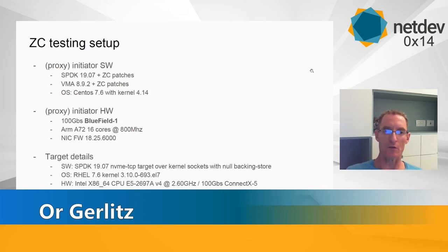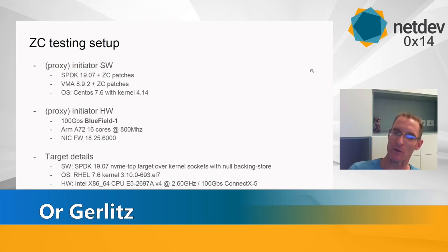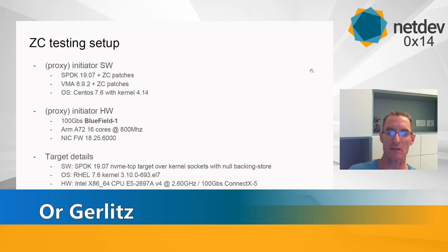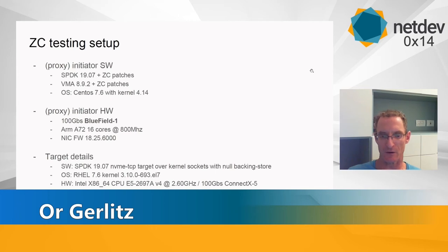Regarding the testing setup: the software on the initiator smart NIC was SPDK 19.07 — this work was done last autumn — along with VMA with those patches, running CentOS 7.6. The smart NIC itself was Bluefield 1, 100 Gbps, with 16 A72 ARM cores at 800 MHz in this specific instance. The target was a remote x86 node — not a bottleneck — with a null backing store, since we wanted to see the improvement in the network protocol.